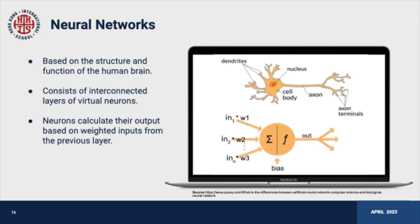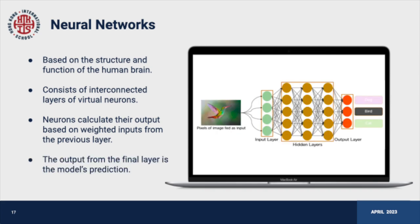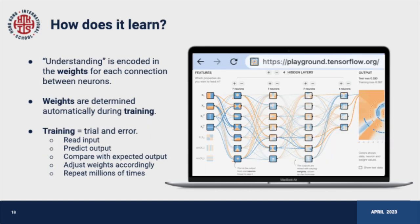Neural networks can be applied to a wide range of tasks, including language understanding and image recognition. They learn through a process of trial and error, during which their understanding of a problem is encoded in the weights for each connection between neurons. During training, the network reads input, predicts output, compares it with the expected output, adjusts the weights accordingly, and repeats the process millions of times. The weights are determined automatically by the model's algorithm.